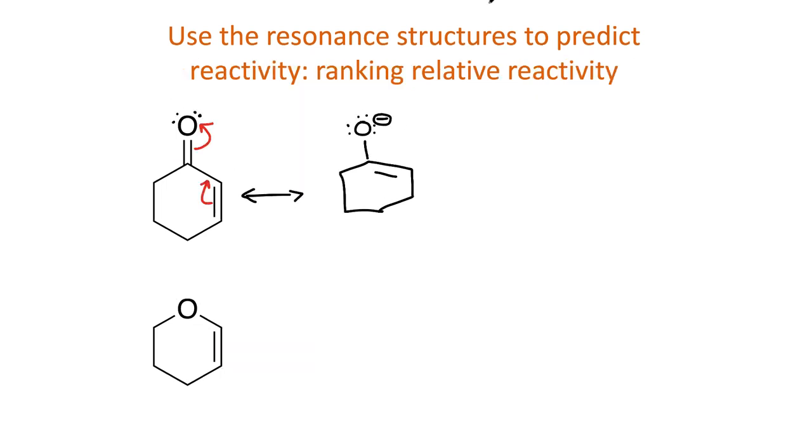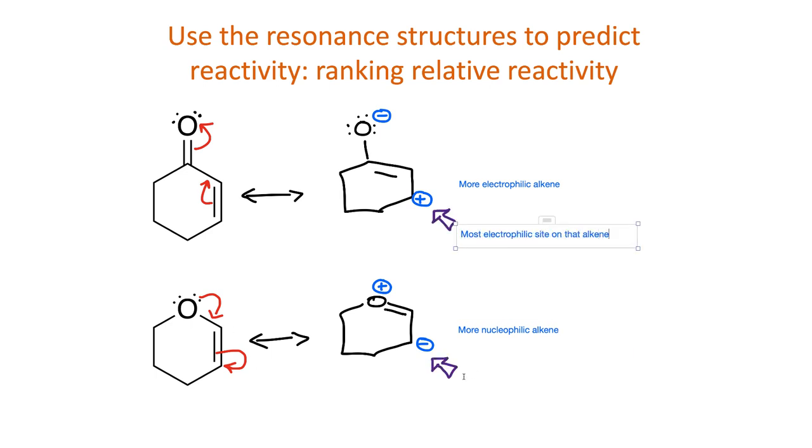We can also use the resonance structures to compare between structures. In the top molecule, resonance indicates that electron density is decreasing in the alkene. In the bottom molecule, resonance indicates electron density increasing in the alkene. Comparing the two, the top alkene is the more electrophilic, and the bottom alkene is the more nucleophilic.